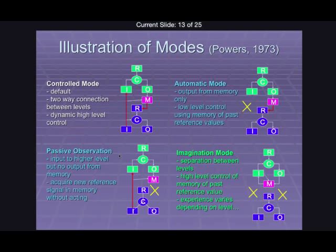The passive observation mode is where information goes upwards into the higher-level systems, but there's no signalling going downwards to exert control over that perception. The idea is that this might be the prevailing mode when you're in a lecture, or when you're reading a book, or when you're sitting in a park looking around. It is possible to take information in, take perception in, even if it goes against your goals at the time.